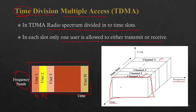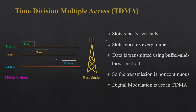We are dividing our resources in terms of time. When user 1 wants to transmit information to the base station, it uses a particular time slot to transmit its information. These slots repeat cyclically — one by one, each user gets a chance to transmit data. Slots reoccur every frame, so whenever there is a next frame, each user again gets a chance to transmit.